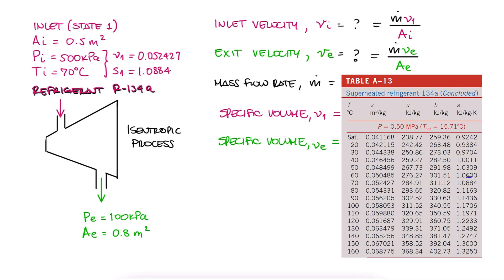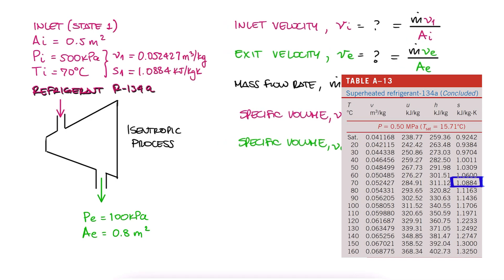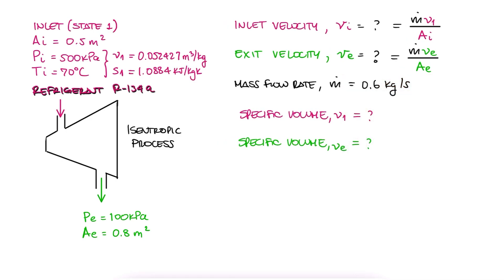While we're here, we can also write down the specific entropy. This is important because we're being told that this process is isentropic, meaning that s1 is equal to s2.